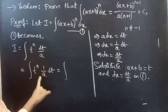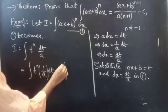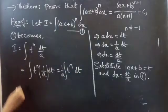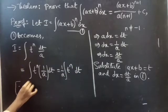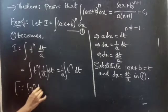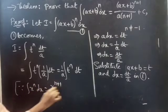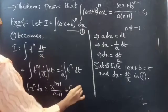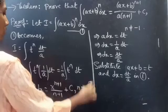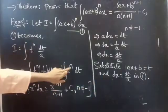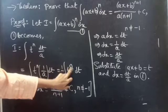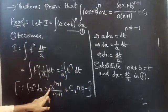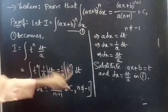Now we will take the constant 1/A outside the integral. We get 1/A times the integral of t^n dt. Since we know that the integral of x^n dx equals x^(n+1) divided by (n+1) plus C for n not equal to minus 1, we are going to apply this formula for the variable t.